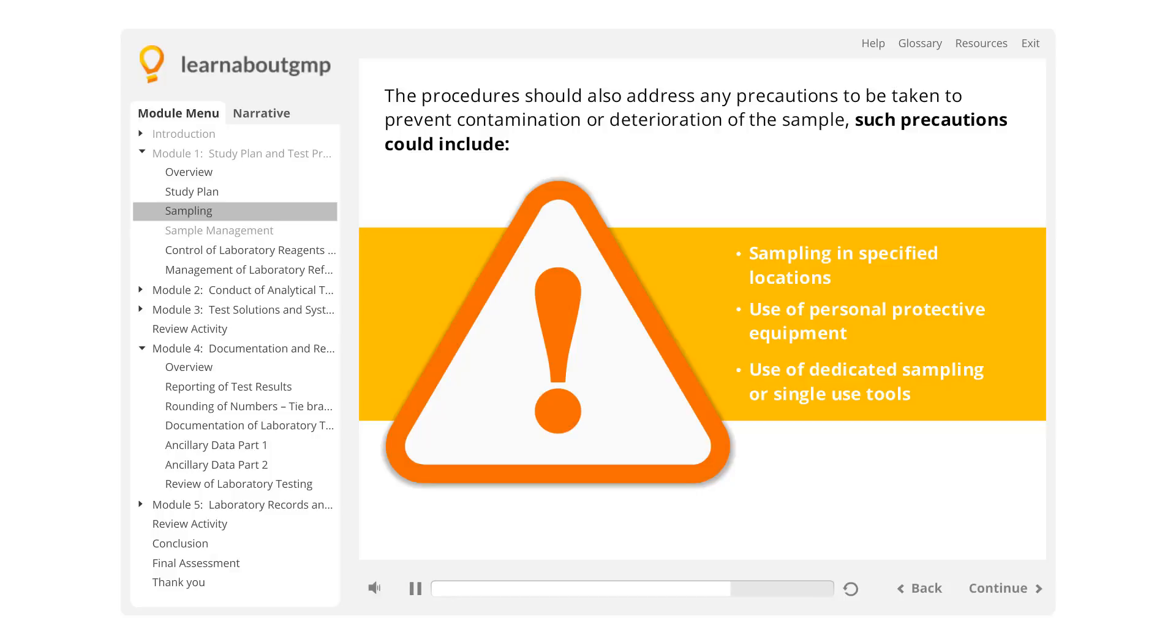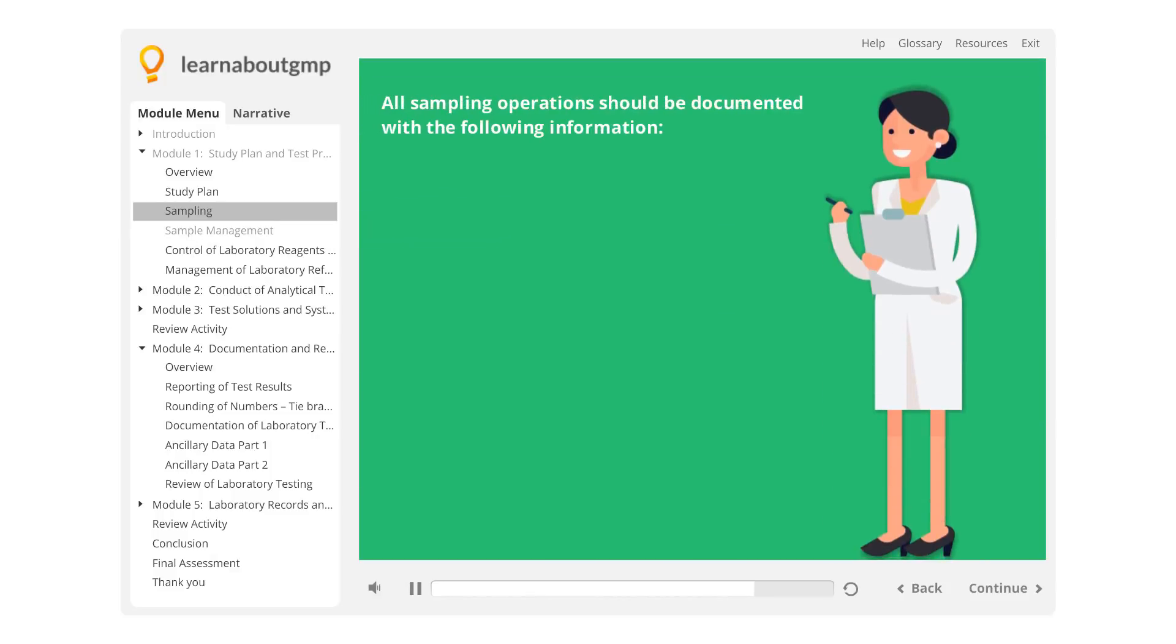All deviations must be approved by laboratory management and authorized by the Quality Assurance Department. All sampling operations should be documented with the following information.